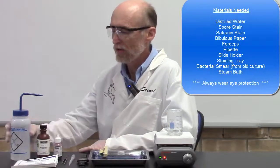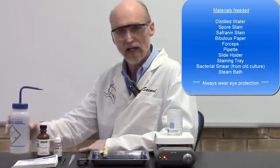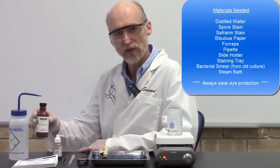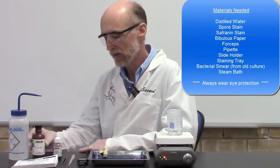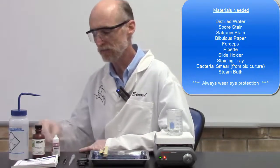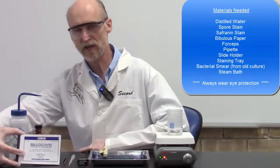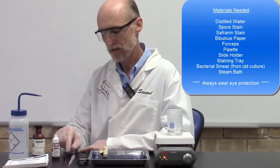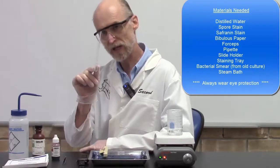Now let's talk about the materials you're going to need. You will need a bottle of distilled or deionized water, a bottle of spore stain which is 1% malachite green, a bottle of safranin stain, a book of bibulous paper, and a pair of forceps.